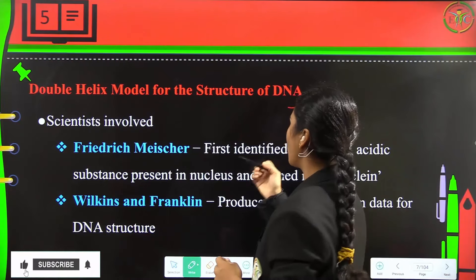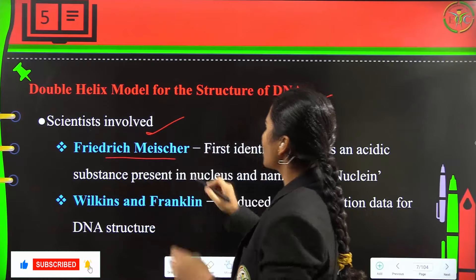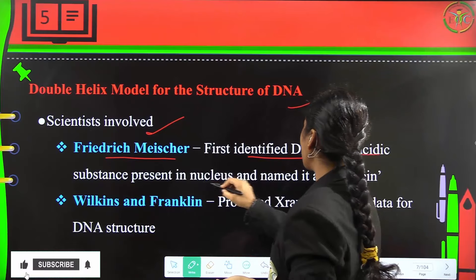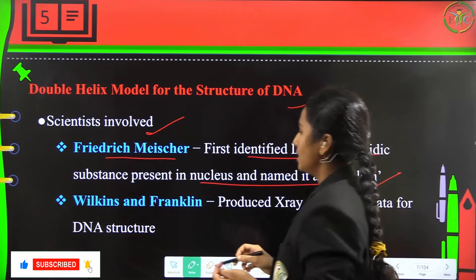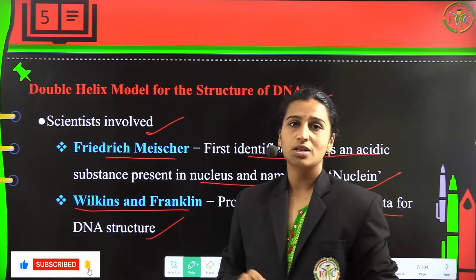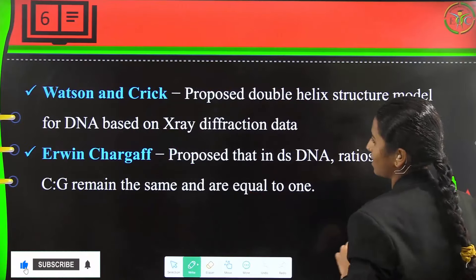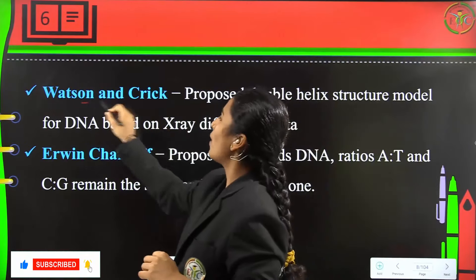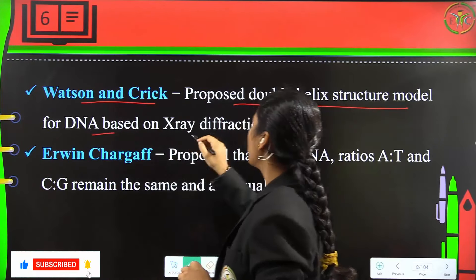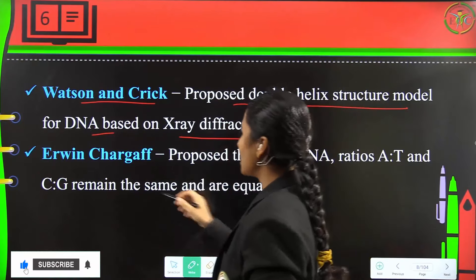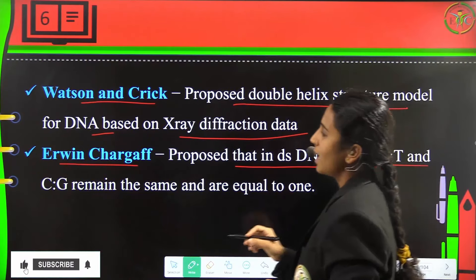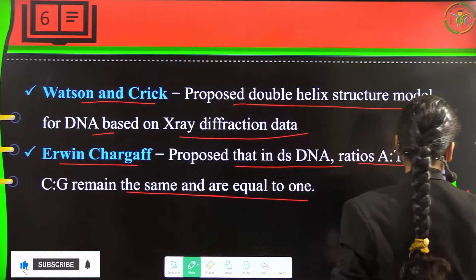Coming to the double helix structure model of DNA. Frederick Miescher first identified DNA as an acidic substance present in the nucleus and named it 'Nuclein.' Wilkins and Franklin produced X-ray diffraction data for the DNA structure. Watson and Crick proposed the double helix structural model for DNA based on that X-ray diffraction data. Erwin Chargaff proposed that in double-stranded DNA the ratios A:T and C:G remain the same and are equal to one.